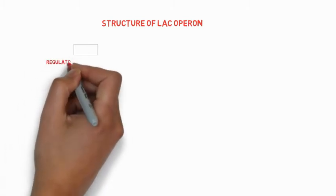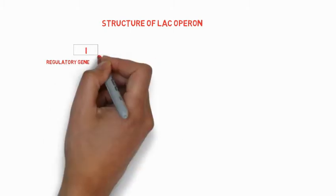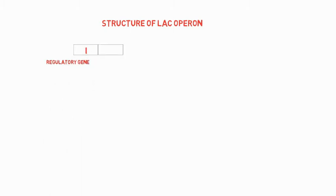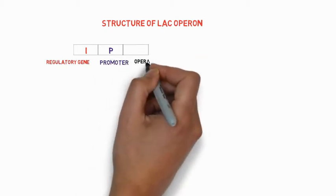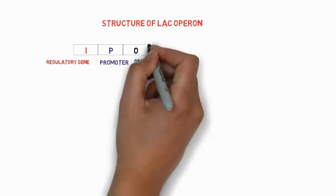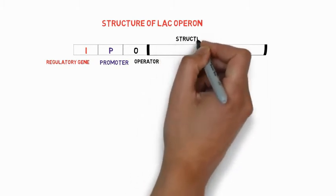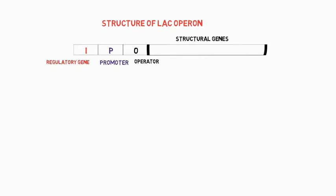Now we are going to discuss the structure of Lac operon. It contains the regulatory gene that is denoted by I, that is inhibitory. It is followed by the promoter site that is denoted by P where the RNA polymerase binds. Promoter site is followed by operator where the lac repressor binds. It contains three structural genes.